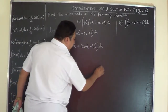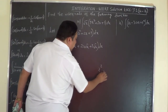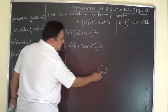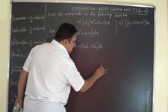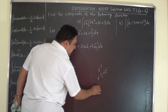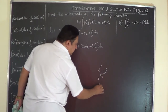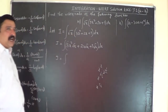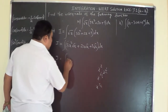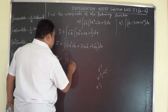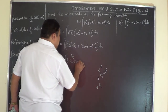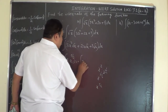Now we simplify the powers. x² into x^(1/2): root x is x to the power of half, so it is x to the power of 2 + 1/2, that is 5/2. So the first term gives 3 · ∫x^(5/2) dx, plus 2 times...